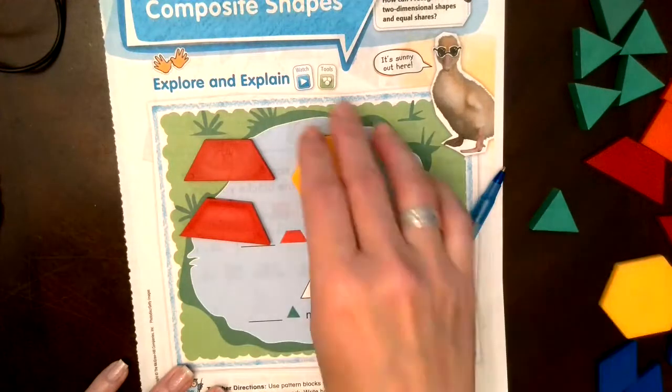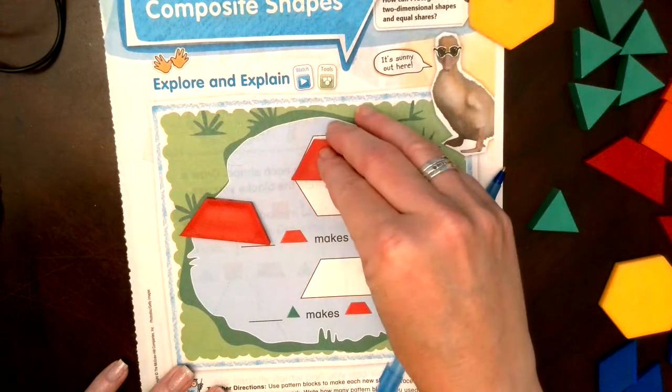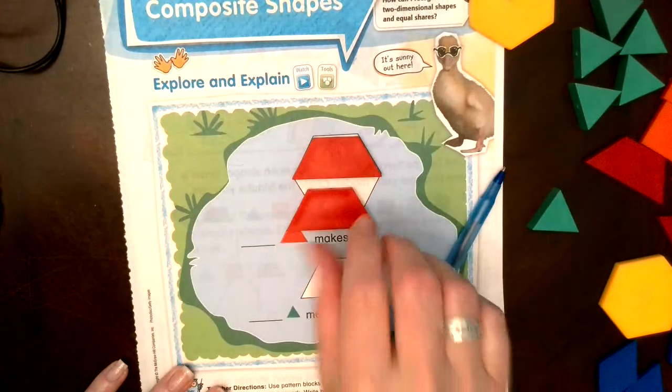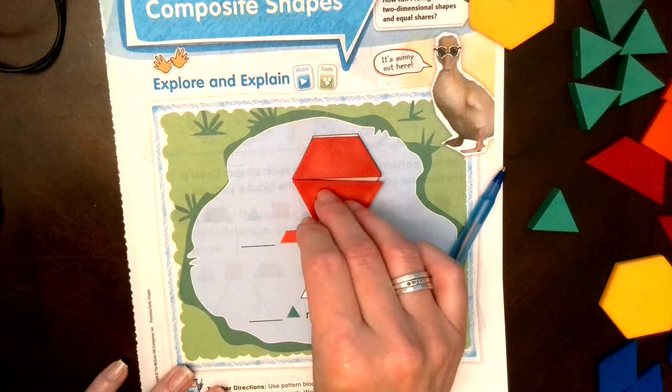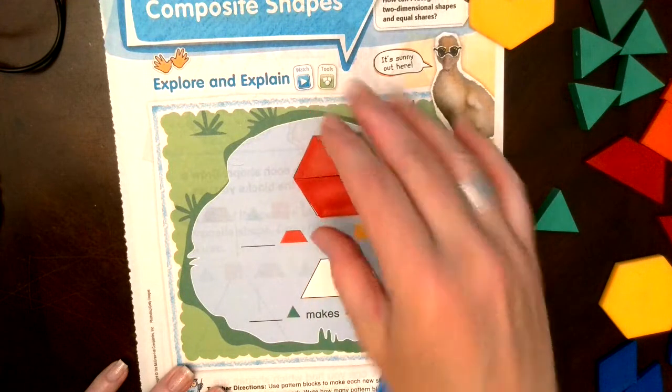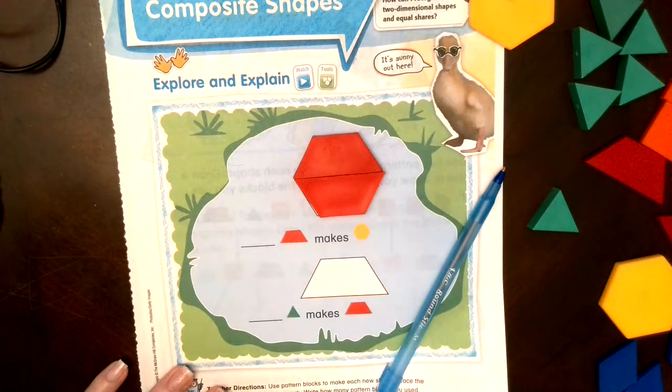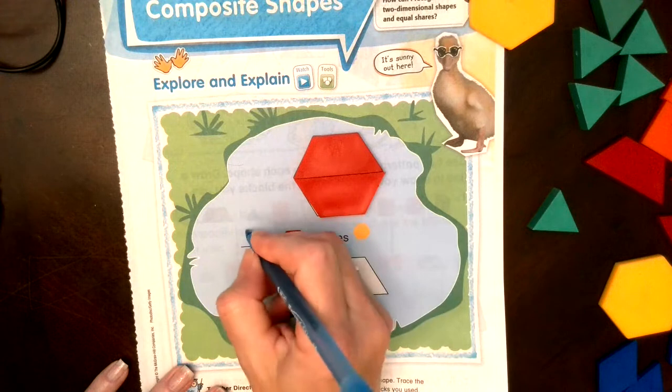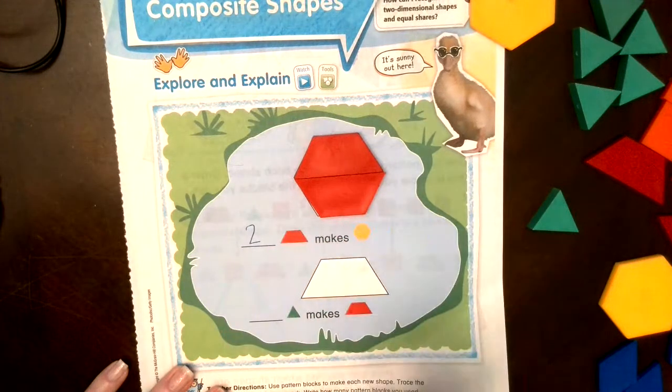So we're going to put them in here. Let's see, that won't work. What if I turn it around? Look at that, two trapezoids makes one hexagon. So we're going to write two here.